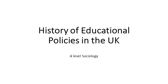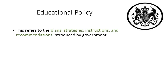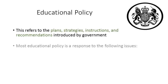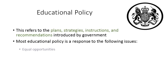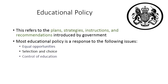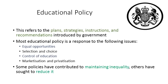Hello and welcome to this video on the history and impact of educational policies in the United Kingdom. Educational policy refers to the plans, strategies, instructions and recommendations introduced by government. Most educational policy is a response to the following issues: equal opportunities, selection and choice, control of education, and marketisation and privatisation. Different governments of different persuasions will have different views on what needs to be done to deal with these challenges and implement policies as they see fit. Some policies have contributed to maintaining inequality; others have sought to reduce it.